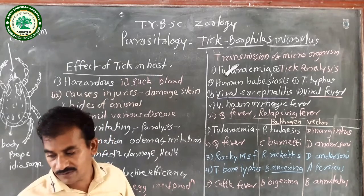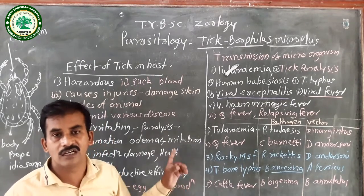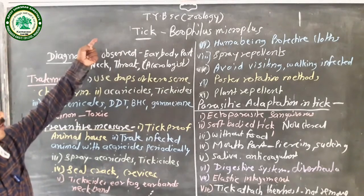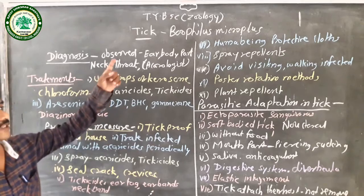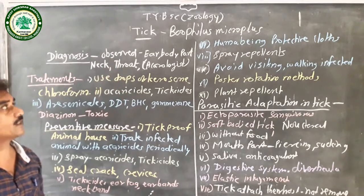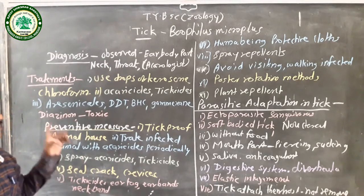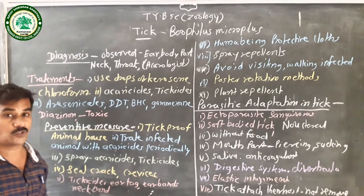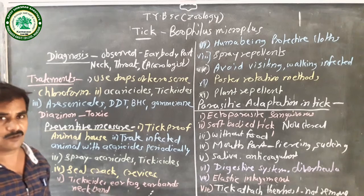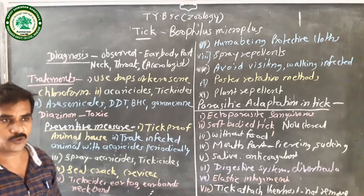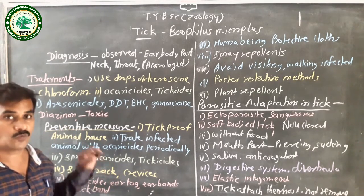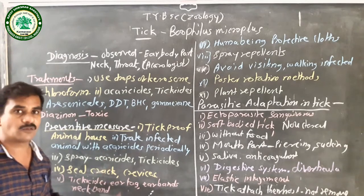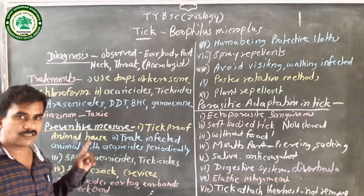Today we are studying the different types of diagnostic conditions of the tick, biologically known as Boophilus microplus. In the last lecture, we studied the systematic position and life cycle — this animal has cosmopolitan worldwide distribution. The life cycle is completed in four stages: eggs, larva, nymph, adult. The life cycle is completed on one host, and in some species, more than two hosts — the number of hosts varies according to species.